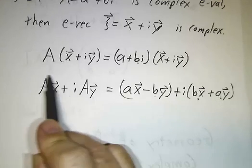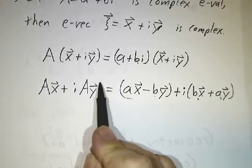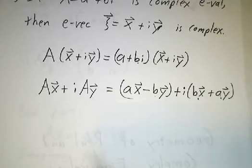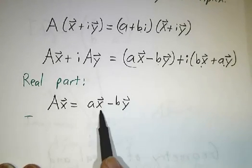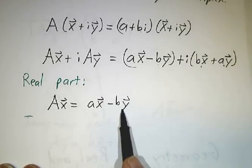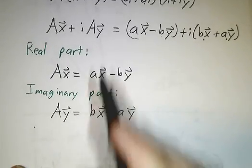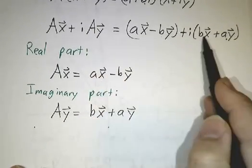And A was a real matrix, so Ax is real and Ay is real. So, the real part of this equation is that Ax = Ax - By. The imaginary part is that Ay = Bx + Ay.